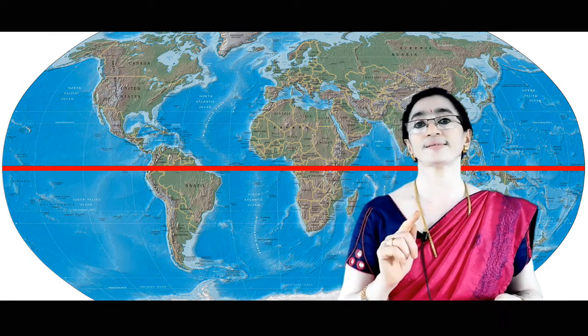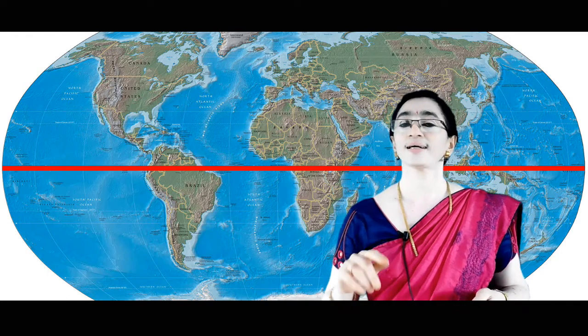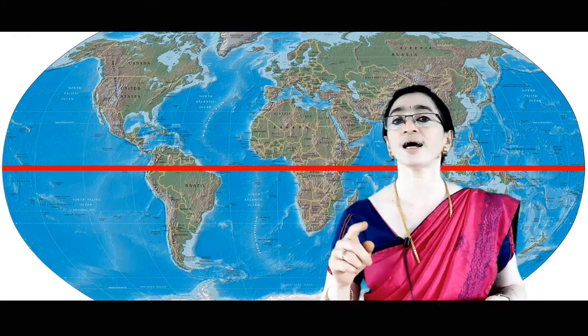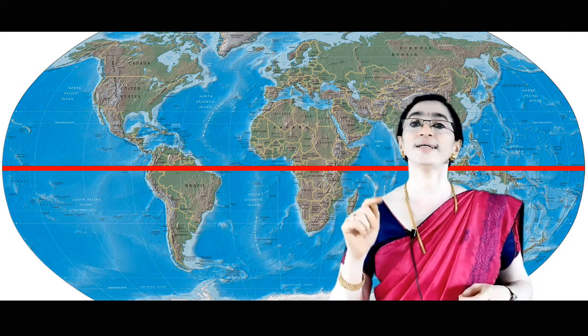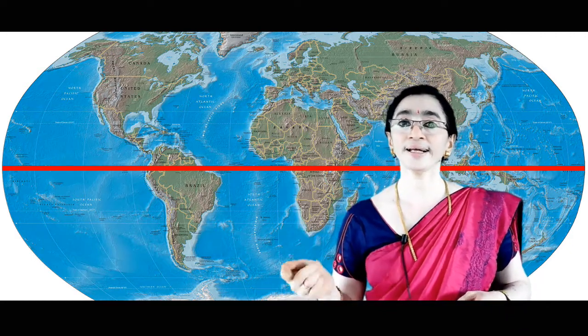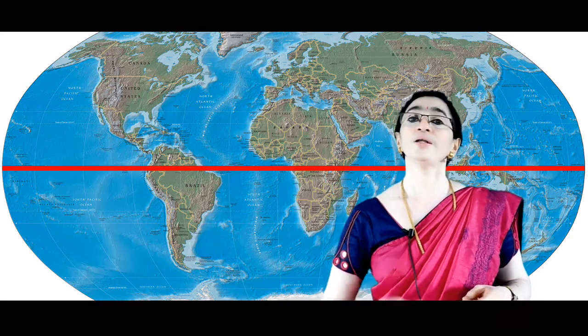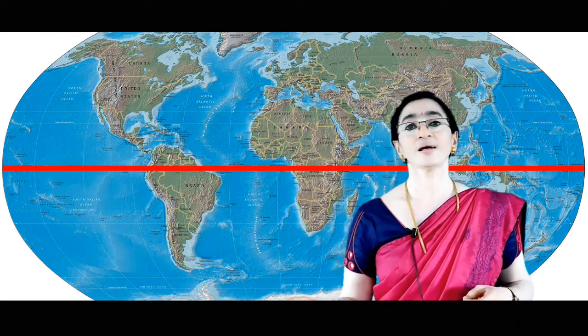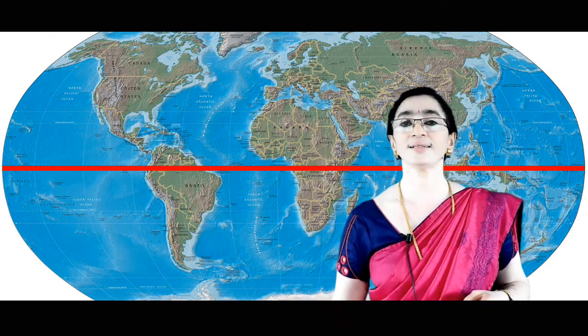Next we move to the Tropic of Cancer. Tropic of Cancer is an important latitude that lies in the Northern Hemisphere. Its value is 23 and a half degrees north — N indicates north. Same way, the Tropic of Capricorn has a value of 23 and a half degrees south — S indicates it is in the Southern Hemisphere.